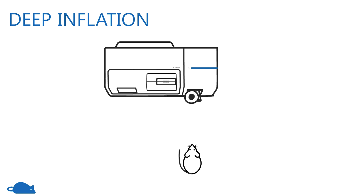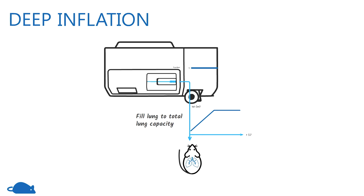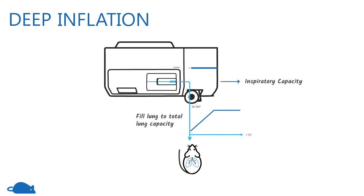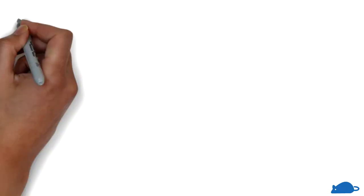In the deep inflation measurement, the lungs are recruited to total lung capacity, followed by a brief hold for lung pressure equilibration. The inspiratory capacity is calculated as the total volume change due to the measurement.